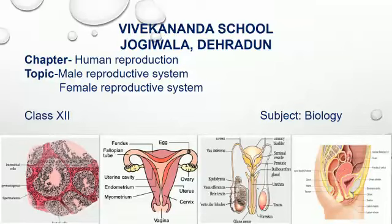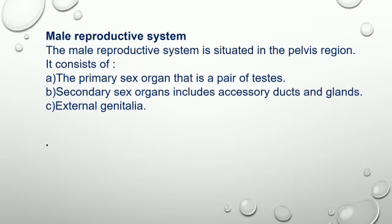Hello students, today we are going to start a new chapter: human reproduction. The topics we are going to discuss are the male reproductive system and the female reproductive system. Let us begin with the male reproductive system.